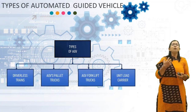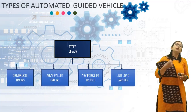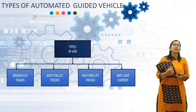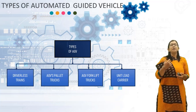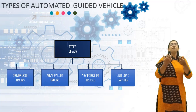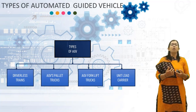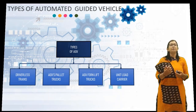There are 4 types of Automated Guided Vehicles. The first one is Driverless Train, the second is AGV Pallet Truck, the third is AGV Forklift Truck, and the last one is Unit Load Carrier.